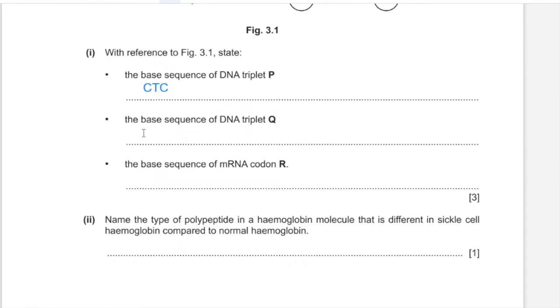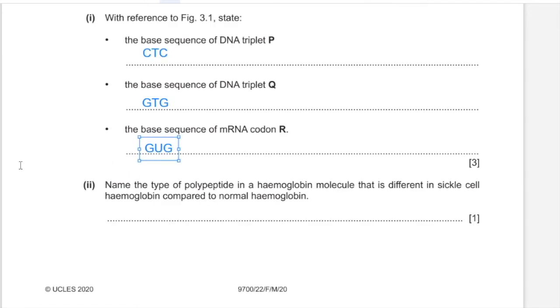The type of polypeptide in a haemoglobin molecule that is different in sickle cell haemoglobin compared to normal haemoglobin is the beta globin polypeptide.